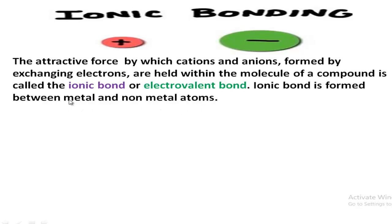Metal atoms generally form cations and non-metal atoms generally form anions, so by ionic bonding, metal and non-metal atoms combine together and form a compound molecule.